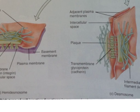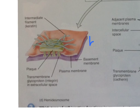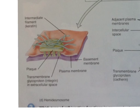Next up are the hemidesmosomes. These have a similar structure to the desmosomes, but as the name suggests, they're basically half of a desmosome — the prefix hemi means half. They are found on the lower or basal surface of cells, where they anchor cells to the underlying basement membrane, not to other cells like the other cell junctions do. They also contain a different type of transmembrane protein: instead of the cadherins found in the desmosomes, the hemidesmosomes contain integrin proteins, and these attach to the intermediate filaments.